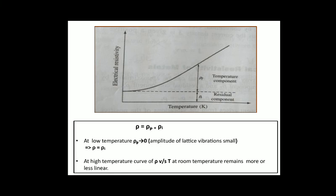This is the graph of electrical resistivity versus temperature. From the graph we can conclude that at low temperature ρ_p is almost zero, so ρ ≈ ρ_i—meaning total resistivity is fully based on impurities present in the metal. At high temperature, the curve of resistivity versus temperature remains more or less linear, but only around room temperature.